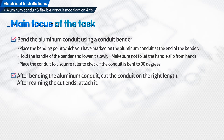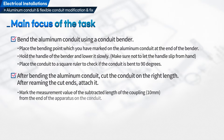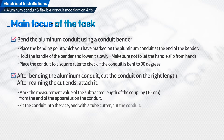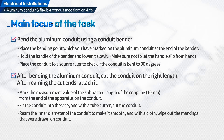Fourth, after bending the aluminum conduit, cut the conduit to the right length. After reaming the cut ends, attach it. Mark the measurement value of the subtracted length of the coupling — 10 mm — from the end of the apparatus on the conduit. Fit the conduit into the vise and with a tube cutter, cut the conduit. Ream the inner diameter of the conduit to make it smooth, then wipe out the markings drawn on the conduit with a cloth.